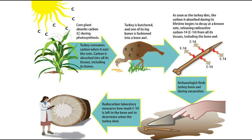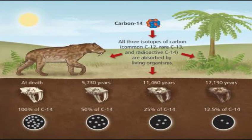For example, if the bone contains 100% of C14, that means the animal died recently. If the bone has 50% of C14, that means the animal died 5,730 years ago. And if the bone tissue has only 25% of C14, that means the animal died 11,460 years ago.